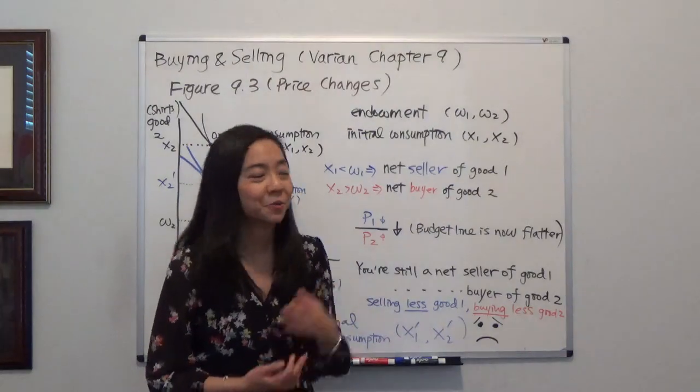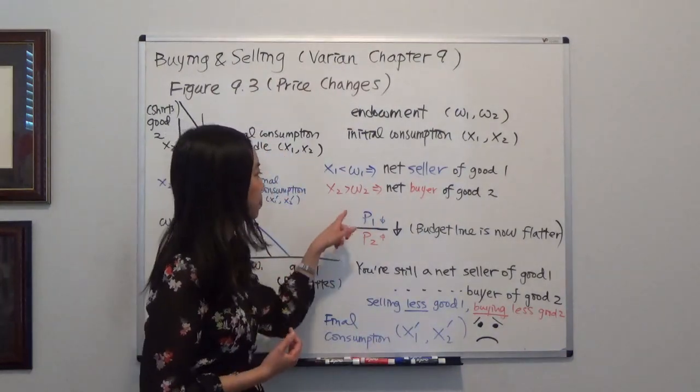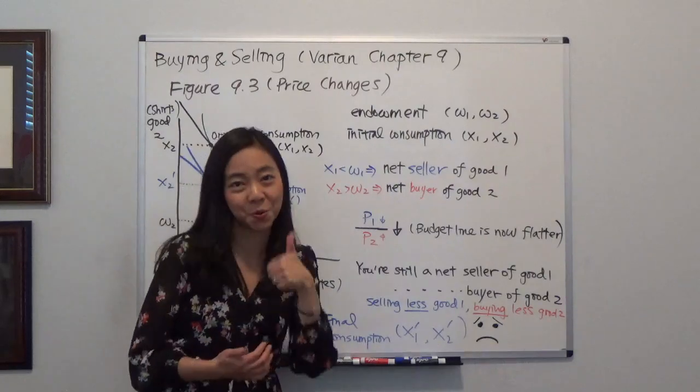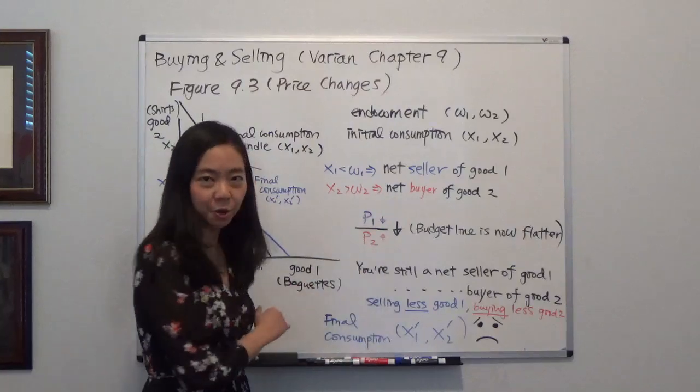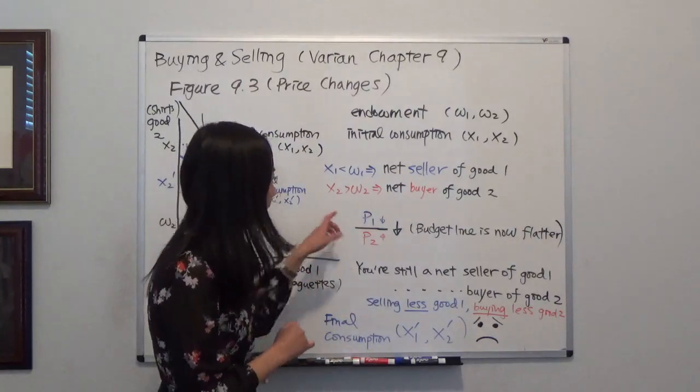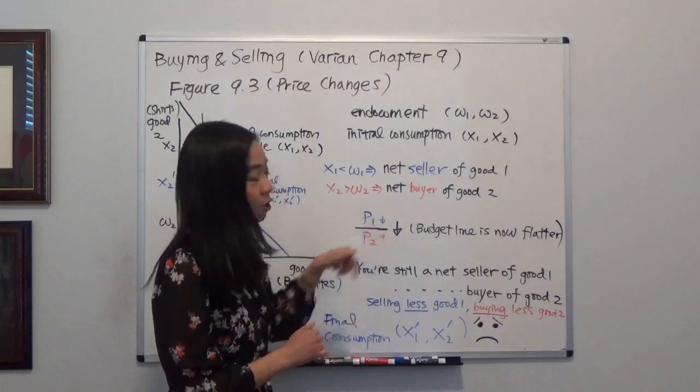Now suppose you're in bad luck. Remember, you're hoping that the price of good one is going to go up and the price of good two is going to go down. But now it becomes the opposite of your hope.